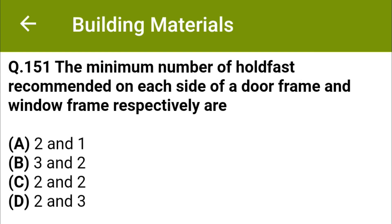Hello friends, welcome to Civil Engineering Exam. Today we're going to see MCQs related with building materials. The minimum number of hold fasts recommended on each side of a door frame and window frame respectively are: option A 2 and 1, option B 3 and 2, option C 2 and 2, option D 2 and 3. The correct answer is option B: 3 and 2.